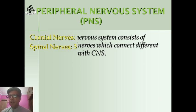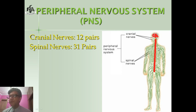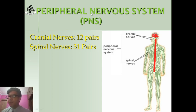Let us see in a diagram. You can see here this green color network — these are the nerves, and these nerves connect different body parts with the Central Nervous System, shown in red in this diagram.